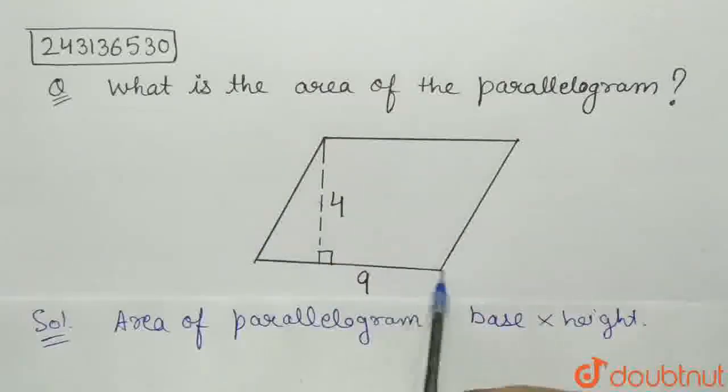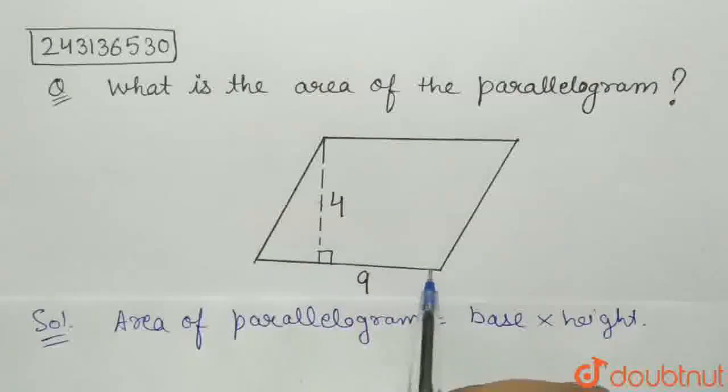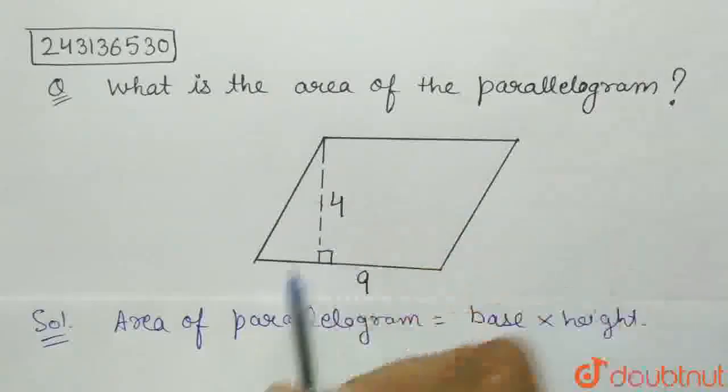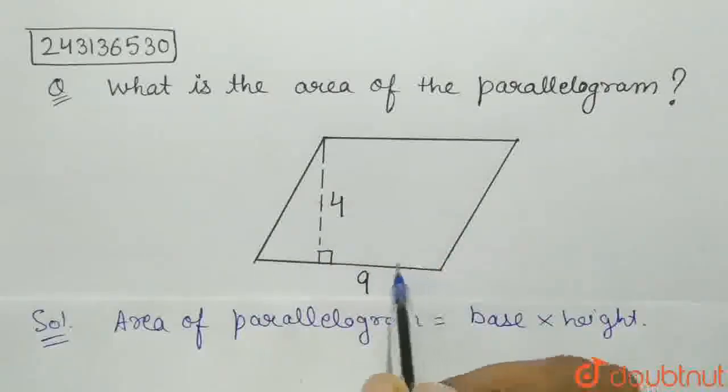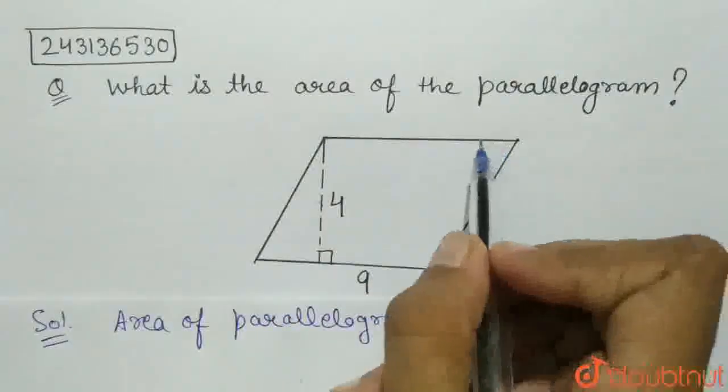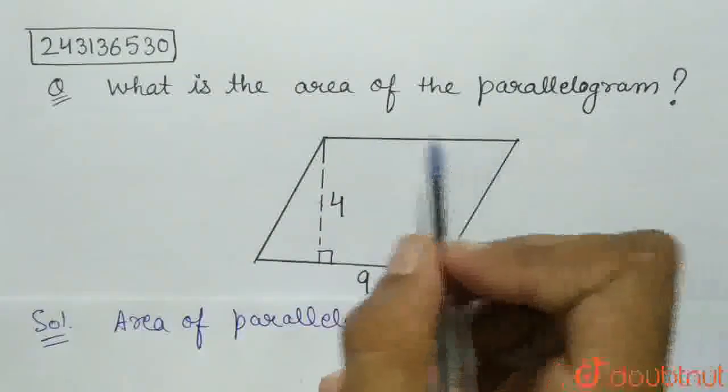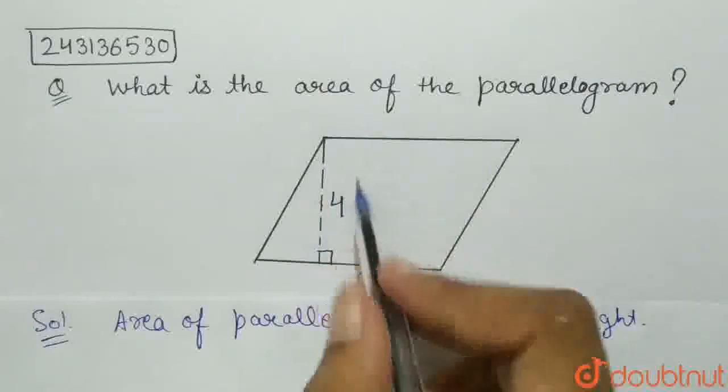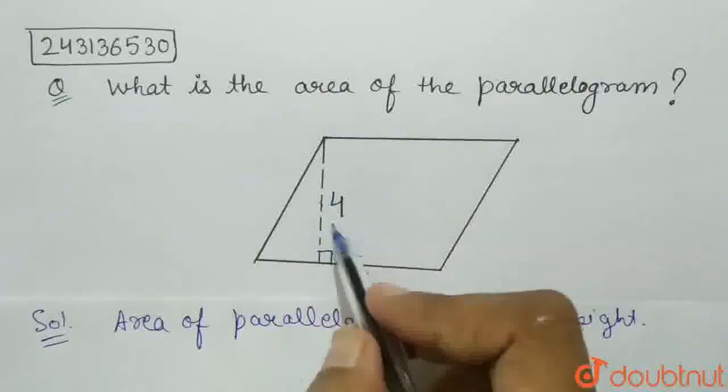the base is one of the sides of the parallelogram which is 9, and the height is the perpendicular corresponding to this side from the side which is parallel to it. The side parallel to the base of 9 is here, and the perpendicular from this side to that side is 4. That is, the distance between the parallel sides is 4.